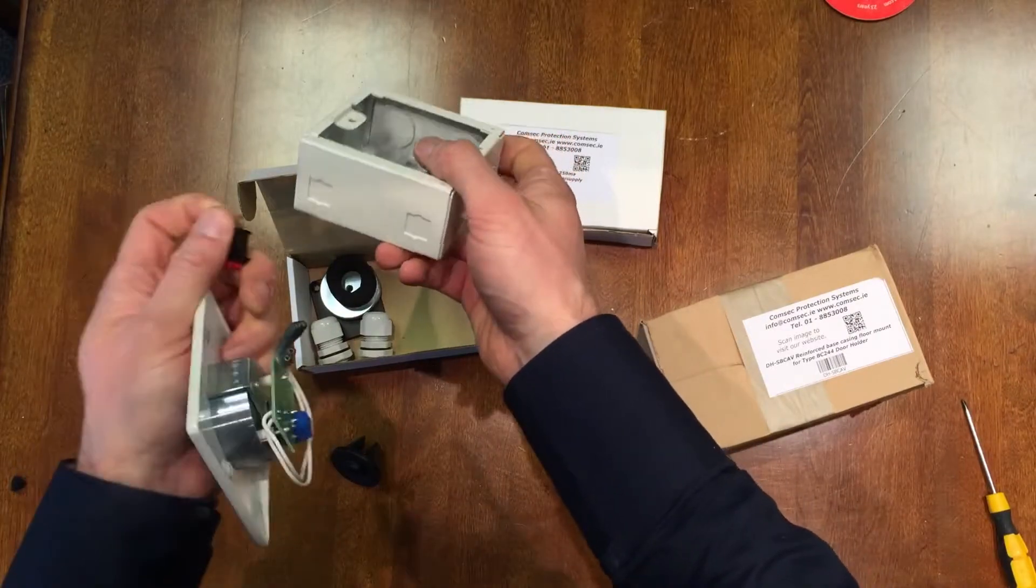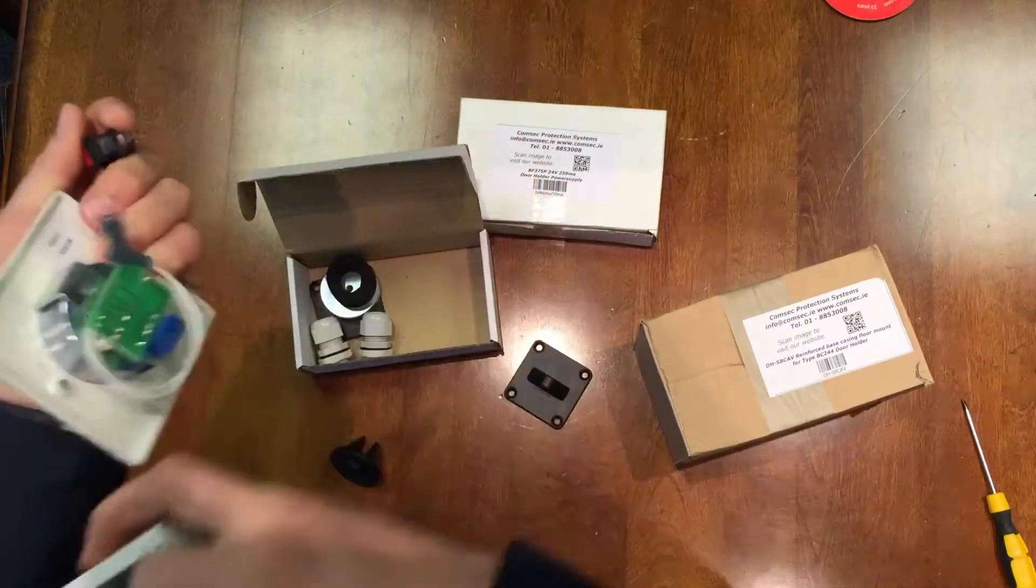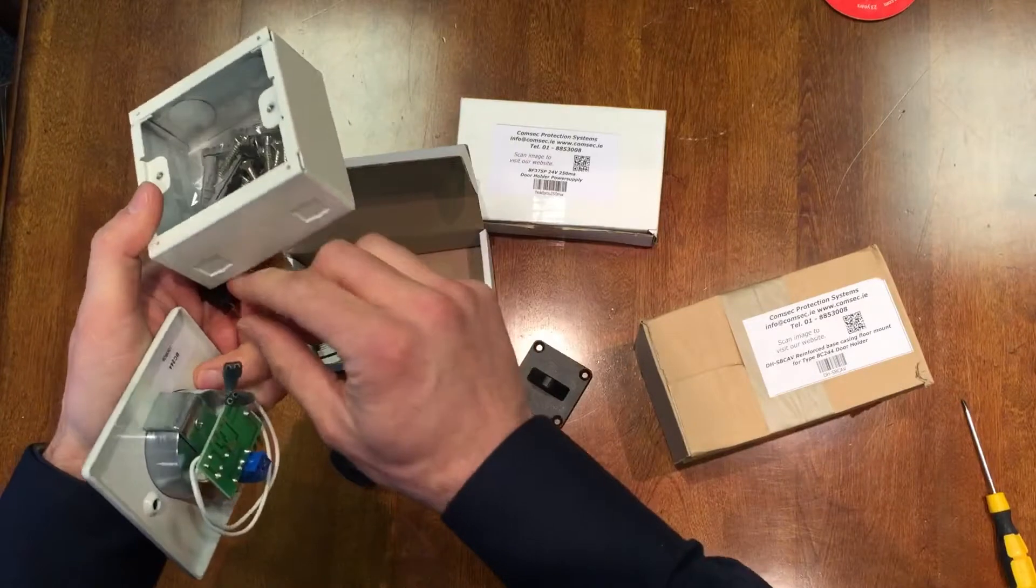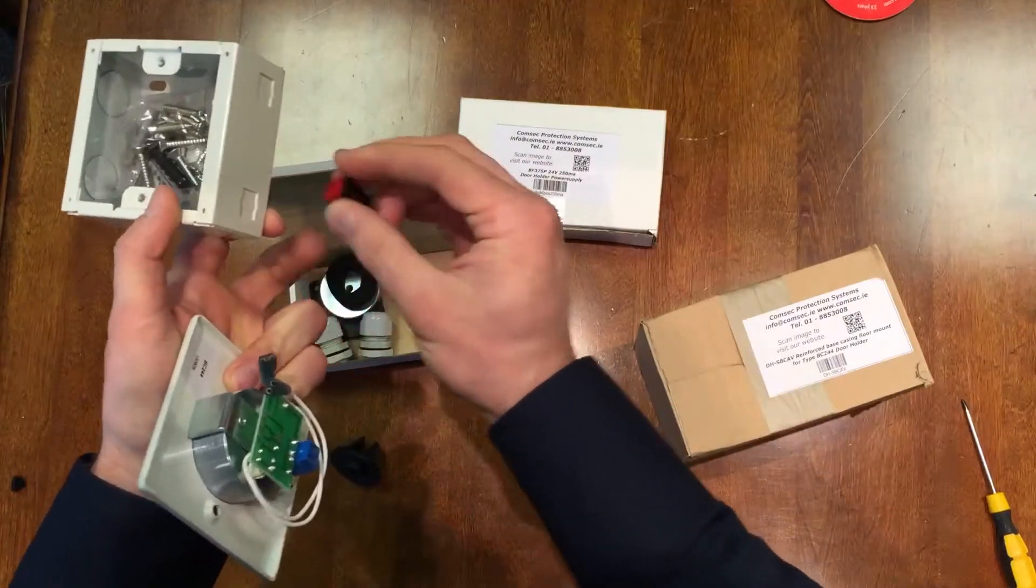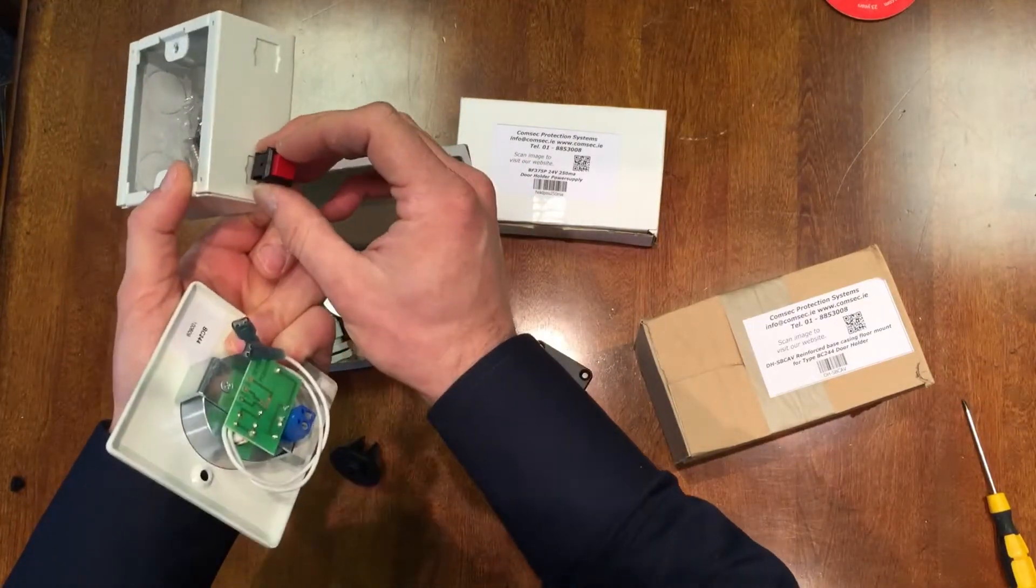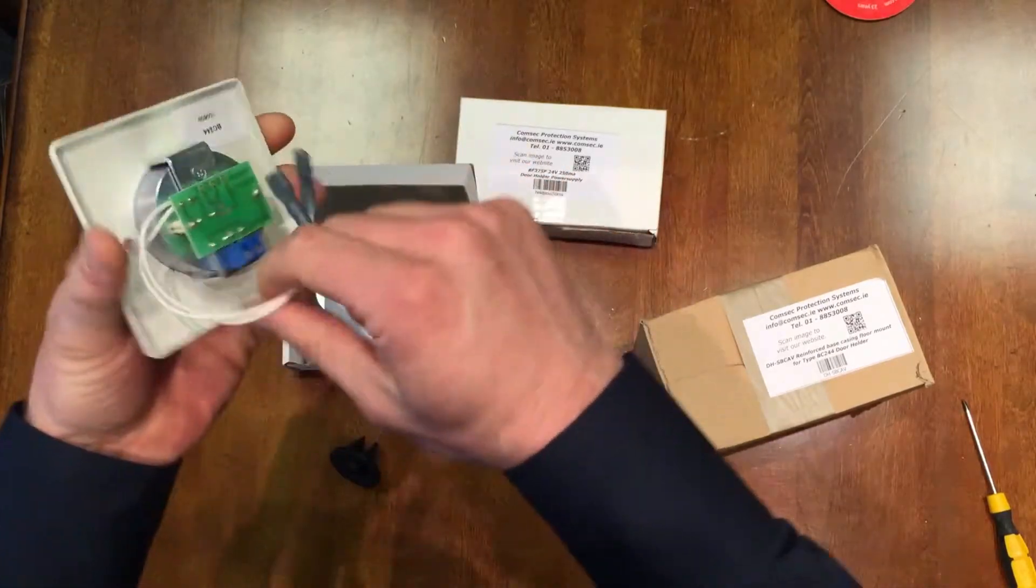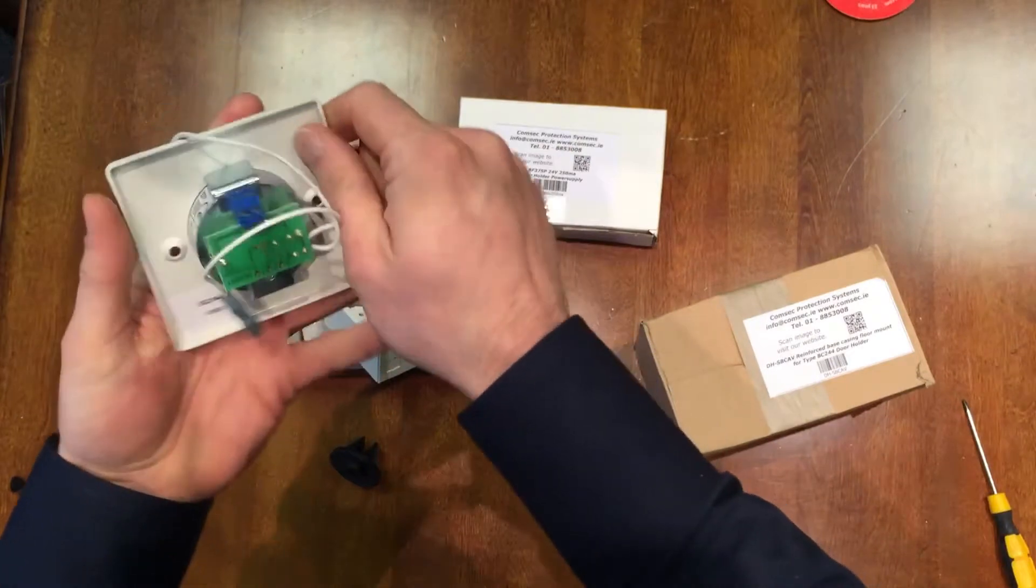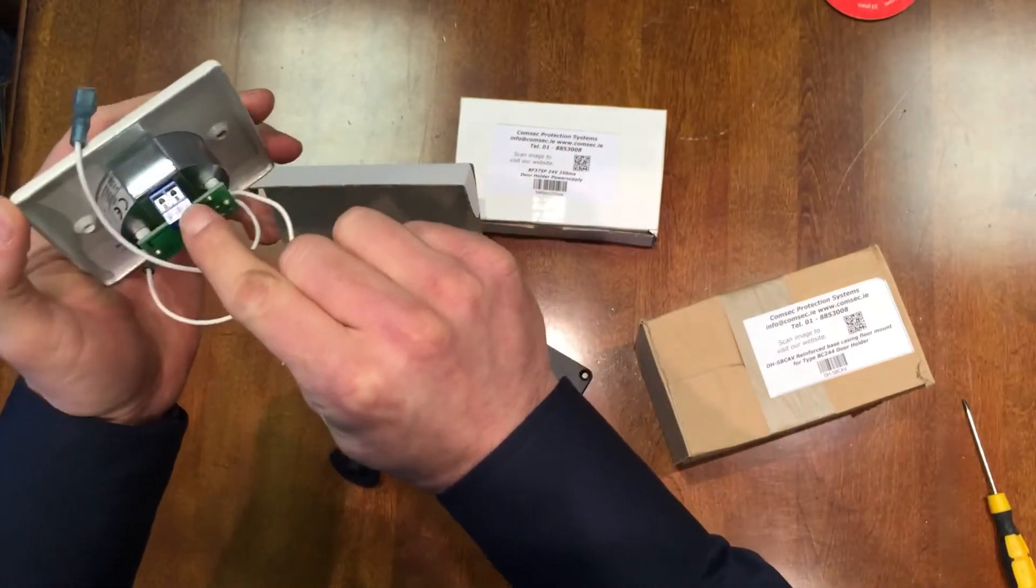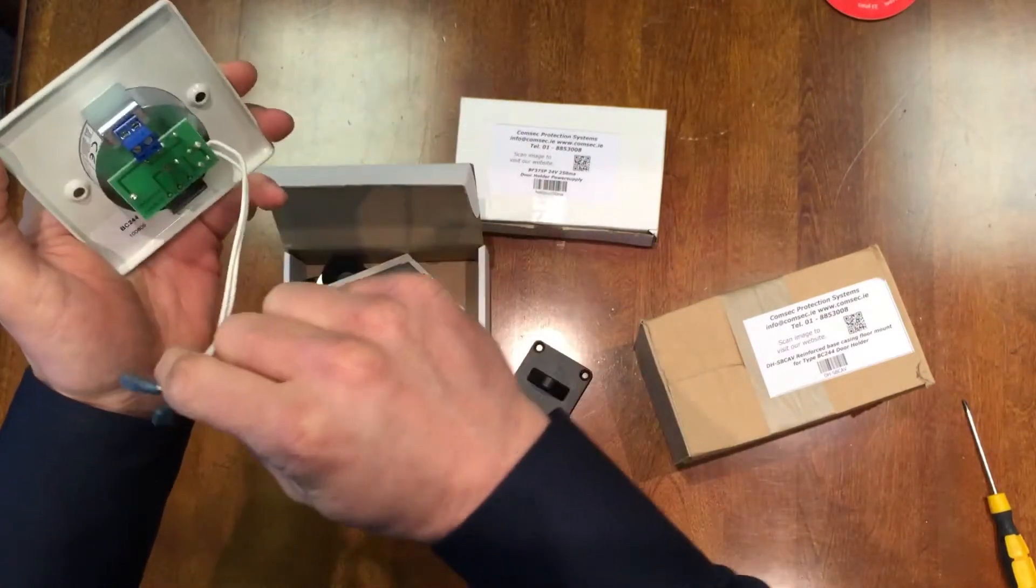The back box has two knockouts for the press release button. The holder itself is a 24 volt holder with simple termination - just positive and negative from your power supply unit. I'll show you the power supply now in a second.